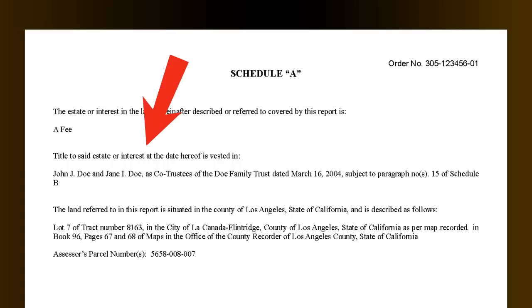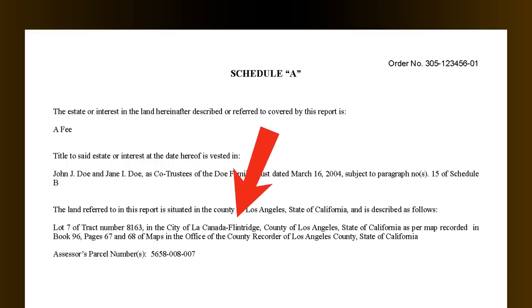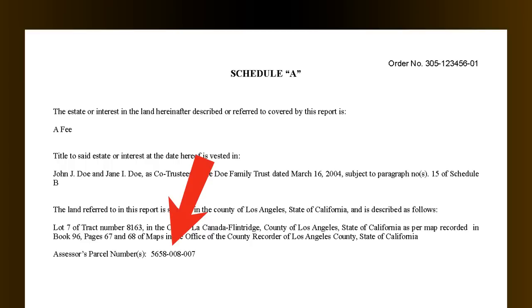The last and final item on Schedule A is the legal description. This refers to your land in the recorded documents of your county recorder's office, shown by lot, tract, book, and page number. Below that is your actual assessor parcel number identifying that piece of land.